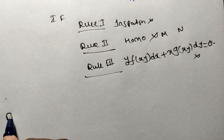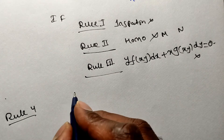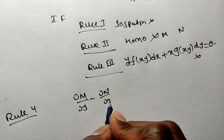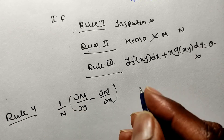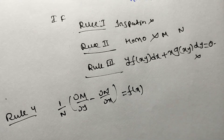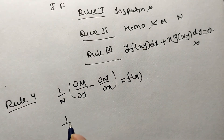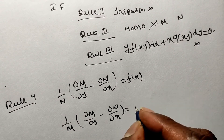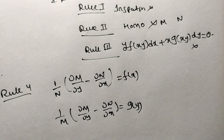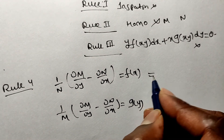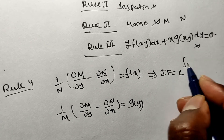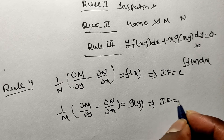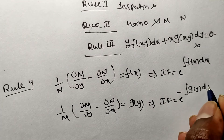We have Rule 4 and Rule 5. For Rule 4, find (∂M/∂y − ∂N/∂x) and divide by N. If the result is a function of x alone, f(x), the integrating factor is e^(∫f(x)dx). If dividing by M gives a function of y alone, g(y), the integrating factor is e^(−∫g(y)dy). We already found ∂M/∂y and ∂N/∂x, so now compute ∂M/∂y − ∂N/∂x.